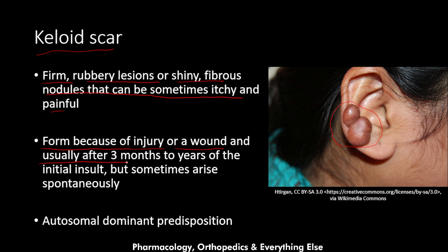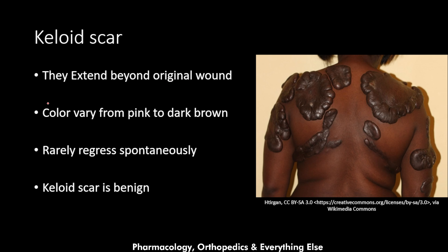The keloid usually forms after three months to two years of the initial insult, but can sometimes arise spontaneously without any injury whatsoever. It has an autosomal dominant predisposition.